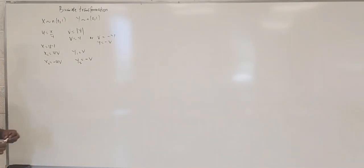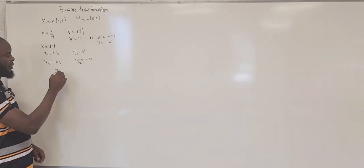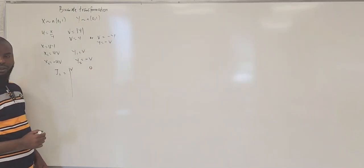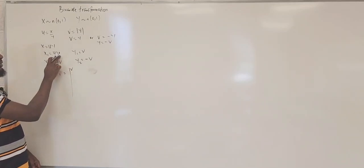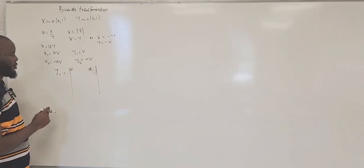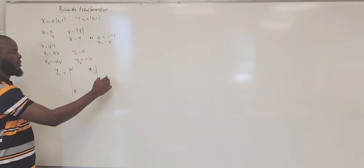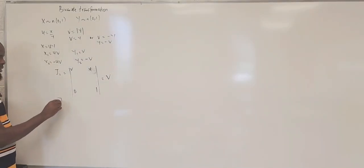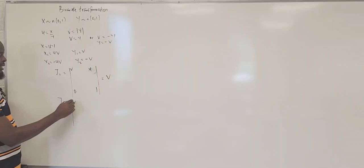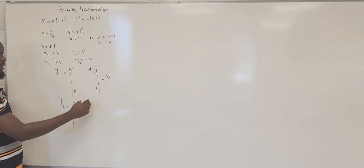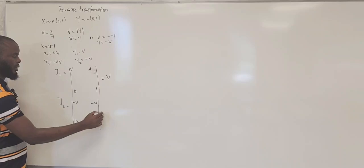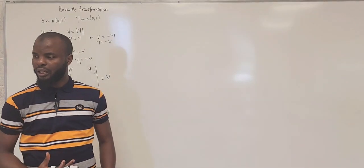These are the two conditions that we have. Now we need to find the Jacobian. For the first Jacobian: differentiating x1 with respect to u gives v, with respect to v gives u; y1 with respect to u gives zero, with respect to v gives one. So the first Jacobian is v. For the second Jacobian: differentiating x2 with respect to u gives negative v, with respect to v gives negative u; y2 with respect to u gives zero, with respect to v gives negative one. So you still have v. We are having two v's as our Jacobians.